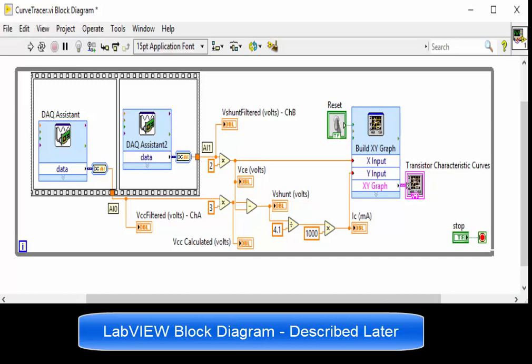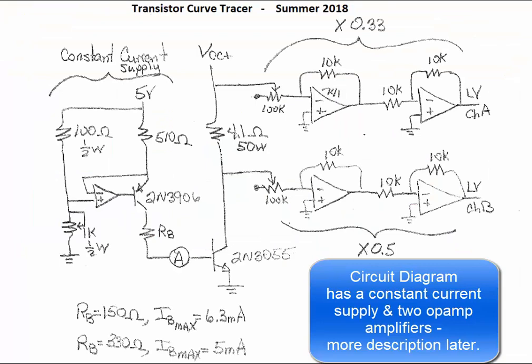The LabView block diagram here will be described later. The circuit diagram has a constant current supply and two op-amp amplifiers.